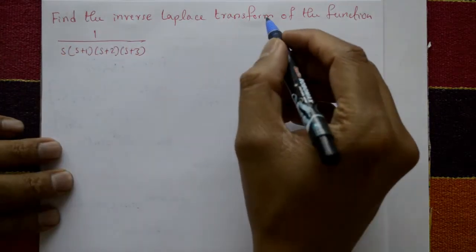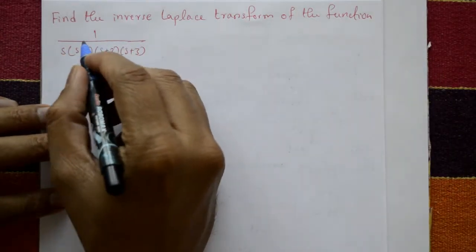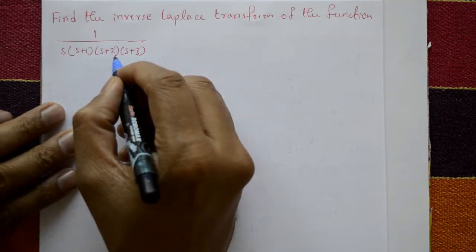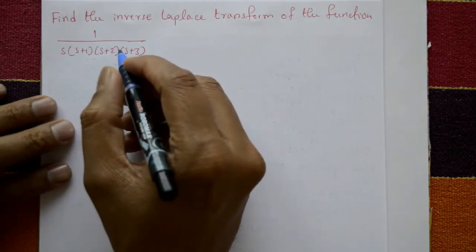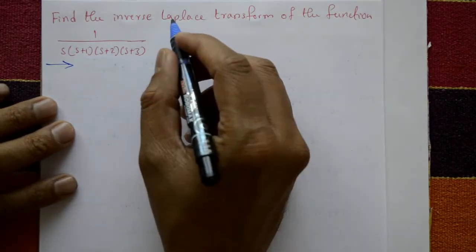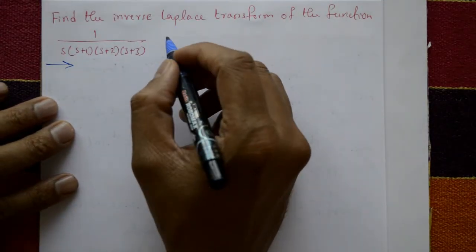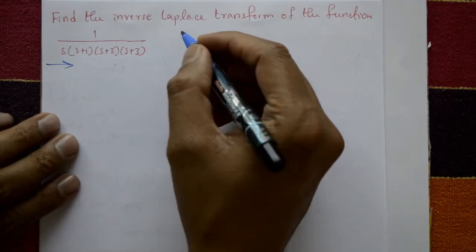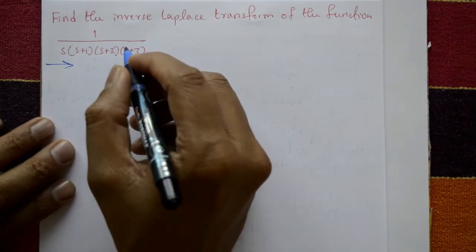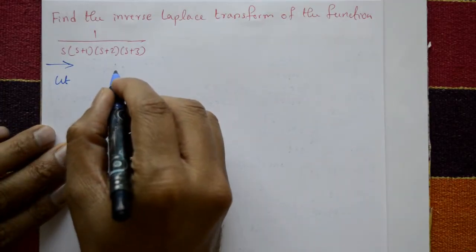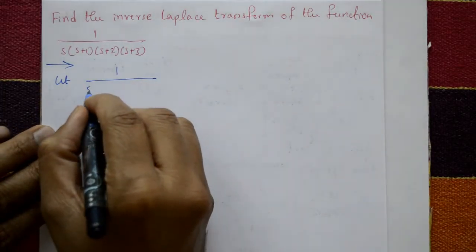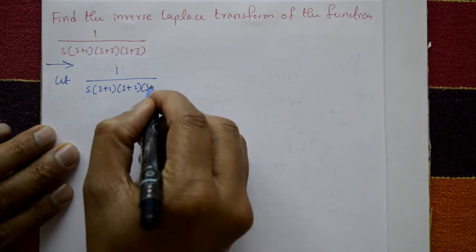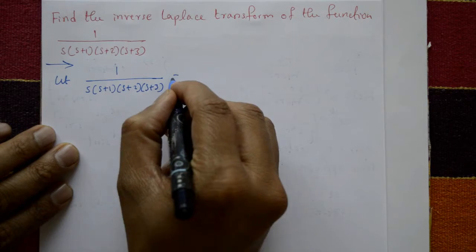Find the inverse Laplace transform of the function 1 upon s into s plus 1 into s plus 2 into s plus 3. In this problem, we find the inverse Laplace transform using the partial fraction method.